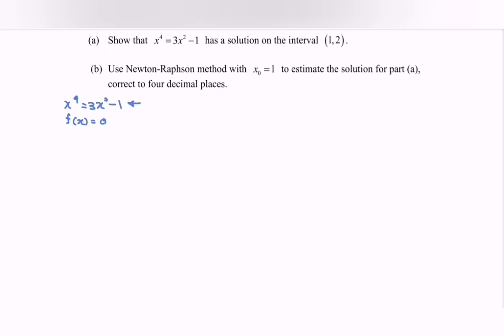We have x to the power of 4 minus 3x squared plus 1 equals 0. So we can say f(x) equals x to the power of 4 minus 3x squared plus 1.